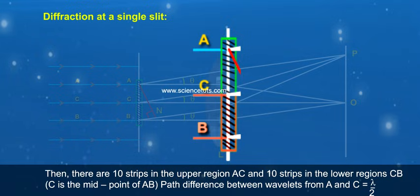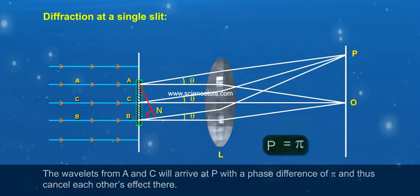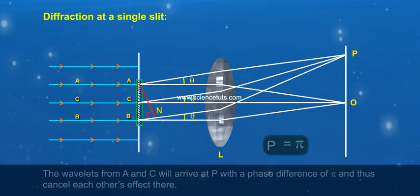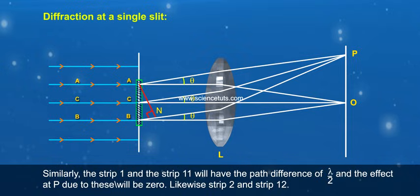Path difference between wavelets from A and C equals lambda by 2. The wavelets from A and C will arrive at P with a phase difference of pi and thus cancel each other's effect there. Similarly, the strip 1 and the strip 11 will have the path difference of lambda by 2, and the effect at P due to these will be zero.